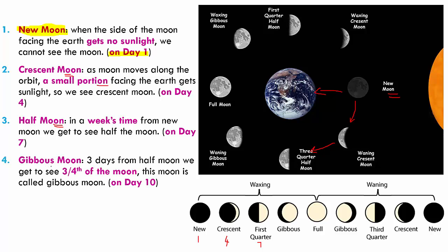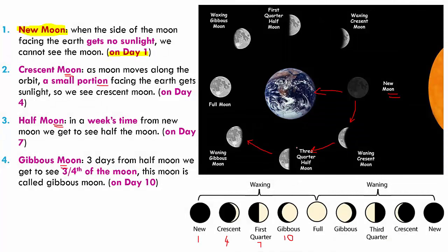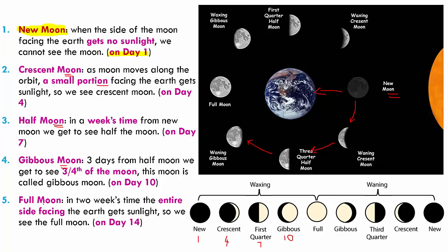Then from there we move on to what is called the gibbous moon. The gibbous moon happens three days after the half moon, and we get to see three fourths of the moon's surface. You can see the gibbous moon on day ten, soon after the half moon. Finally we end up with a full moon day two weeks after day one, when the entire side facing the earth gets sunlight and we get to see the entire moon. This happens on day fourteen of the cycle.